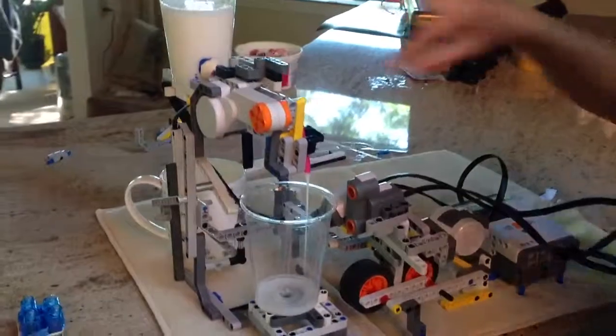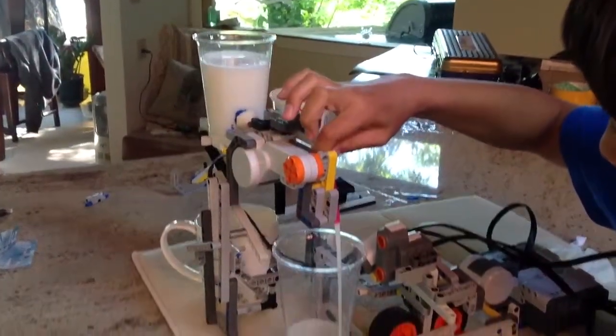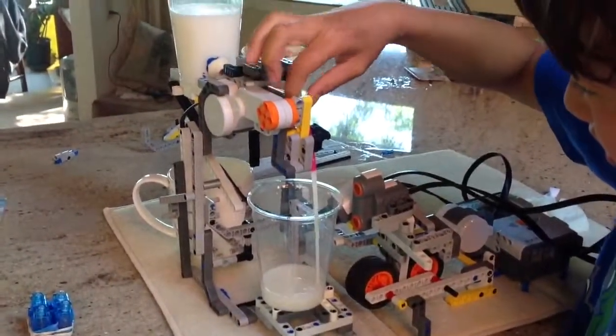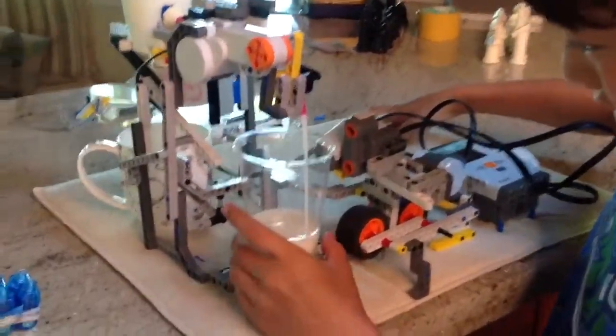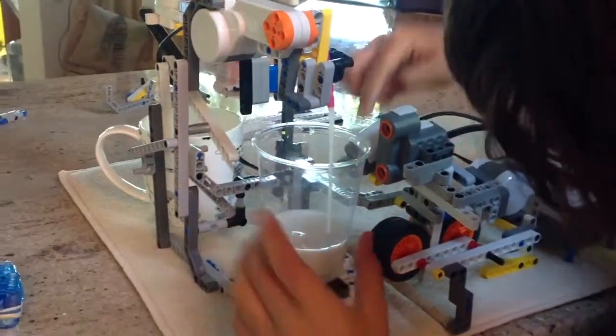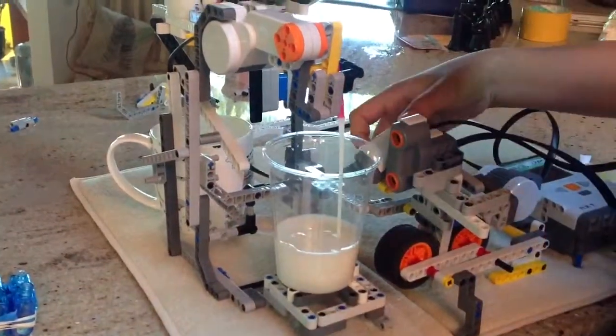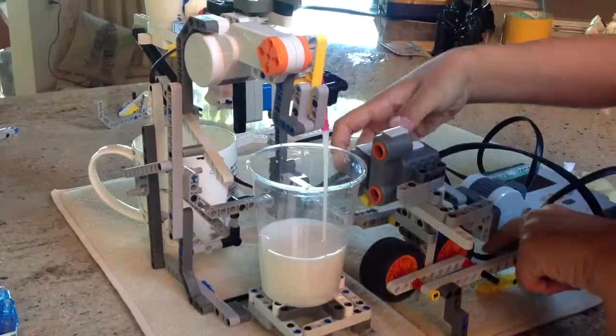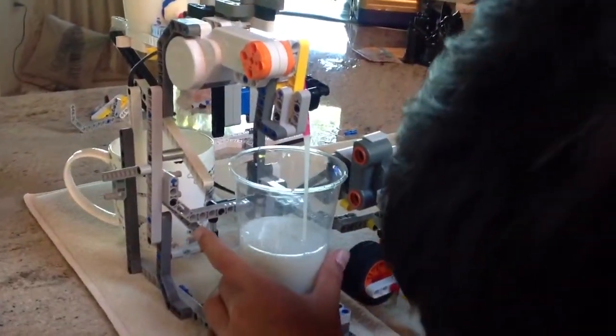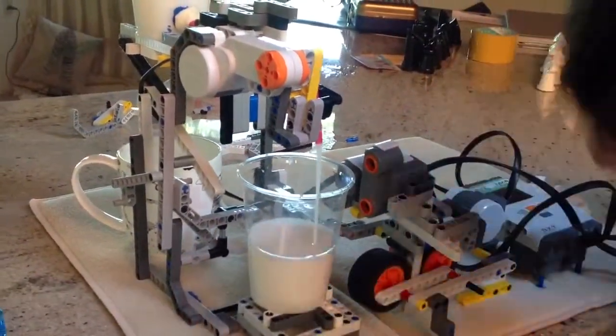I know it's sort of slow but these straws are not that good. The cup has to be closer to the color sensor otherwise it can't sense. This is supposed to be stronger. Like that.